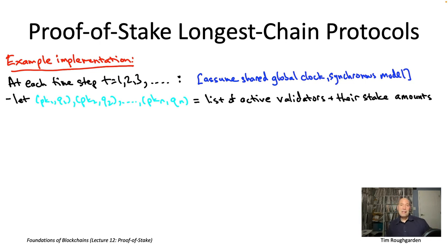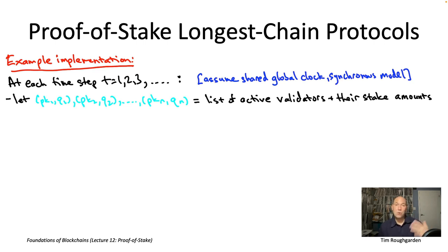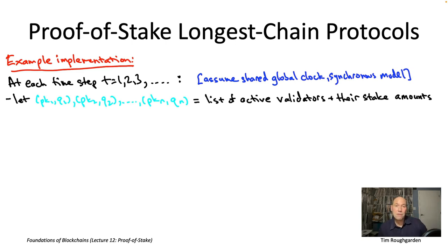As usual, what we're trying to do at a high level is reduce permissionless consensus to a problem we've already solved — namely permissioned consensus, specifically the permissioned longest chain protocol from lecture eight. In longest chain consensus you need to select a leader, and in the permissioned setting there are any number of ways to do that. Here, because some public keys may be owned by the same person, we definitely don't want to select a public key uniformly at random. Instead, we want to select one with probability proportional to the stake — proportional to the Q sub i's.